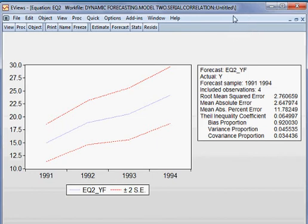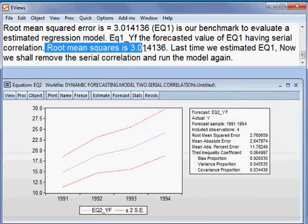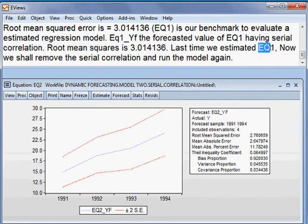So, we can check from here. How to check? I am just proceeding. We can check from here. You see, last time, the root mean squared was 3.014 for EQ1. But for EQ2, the root mean squared has become 2.760659. Meaning that, root mean squared has gone down.